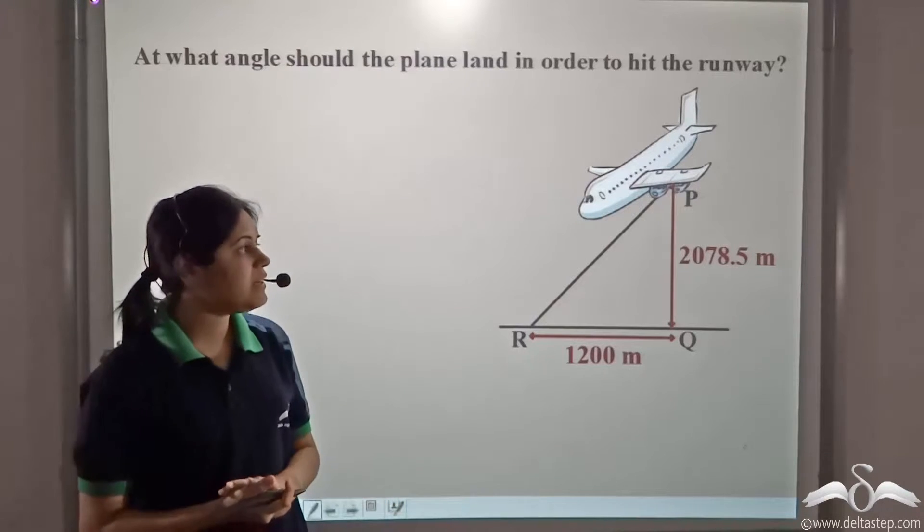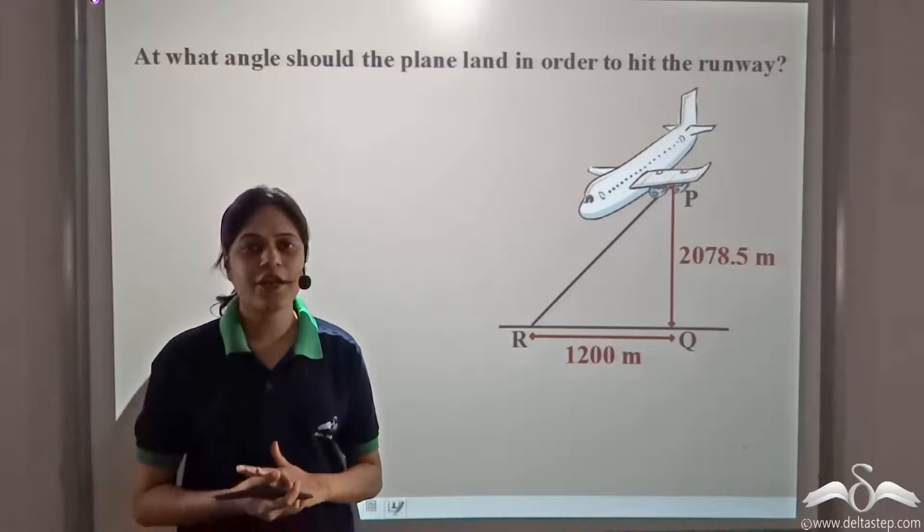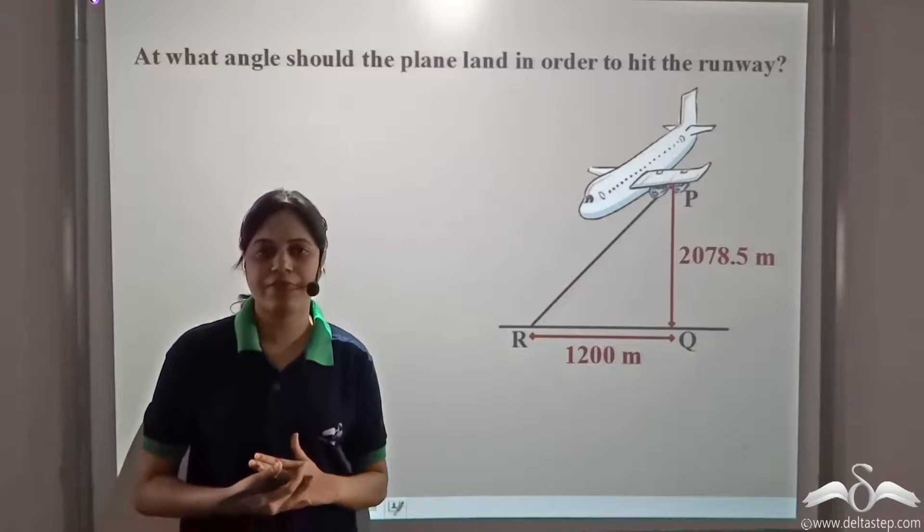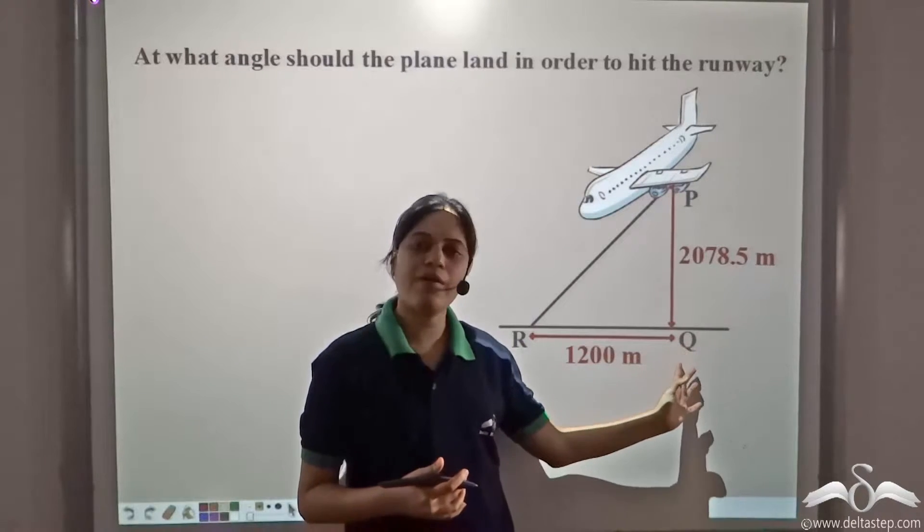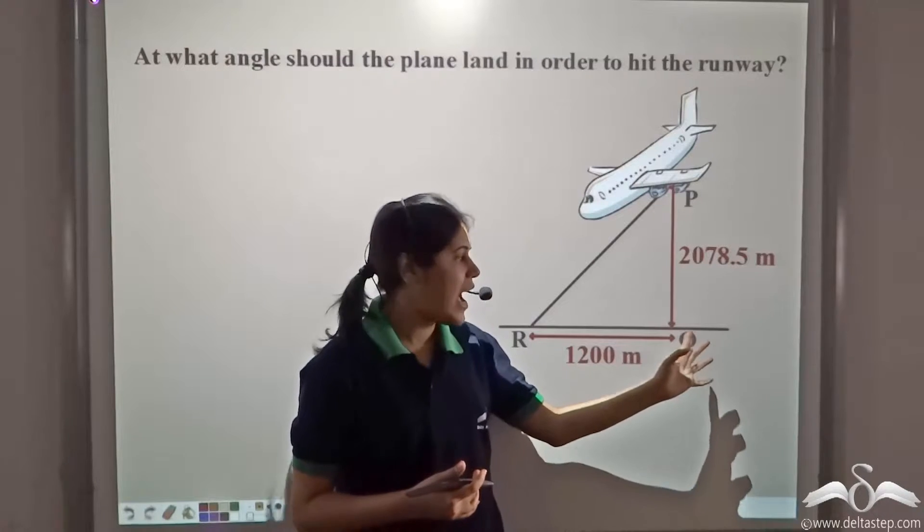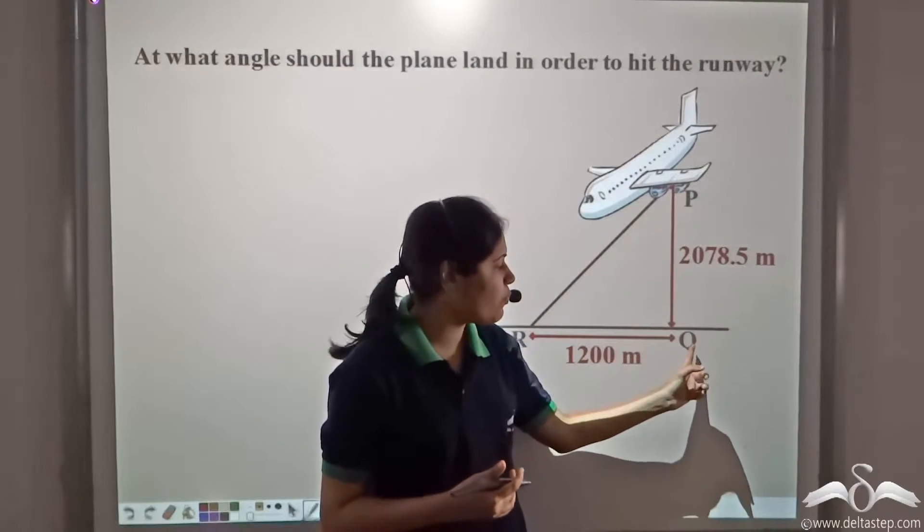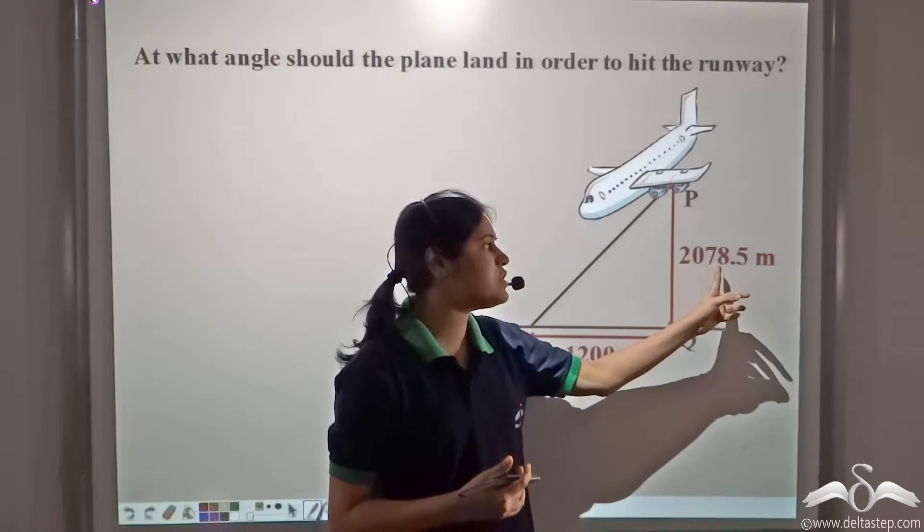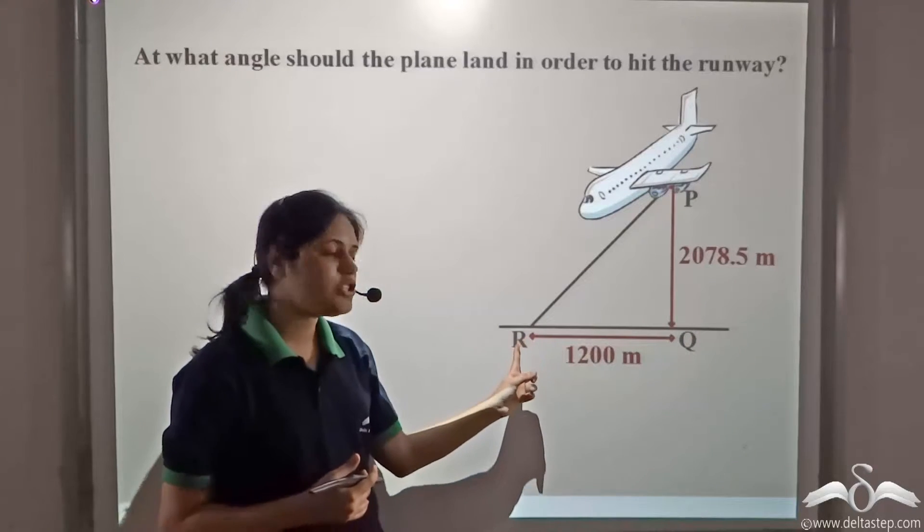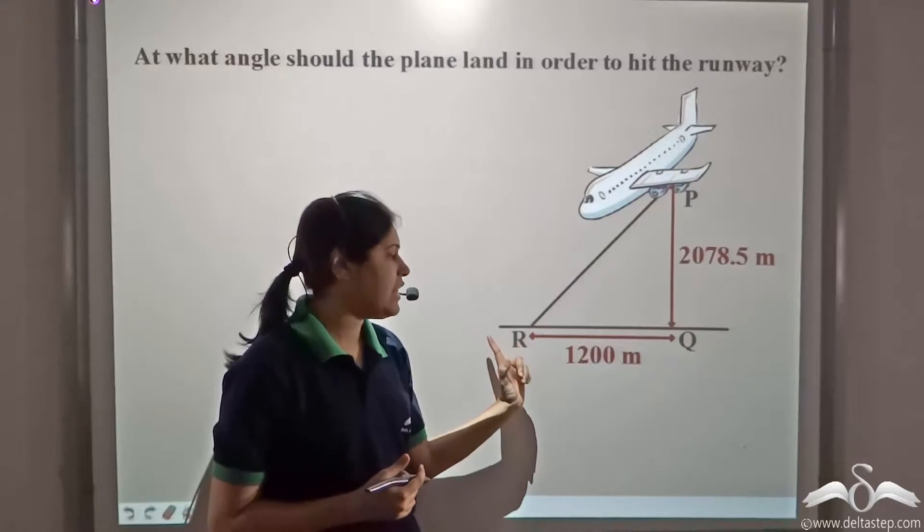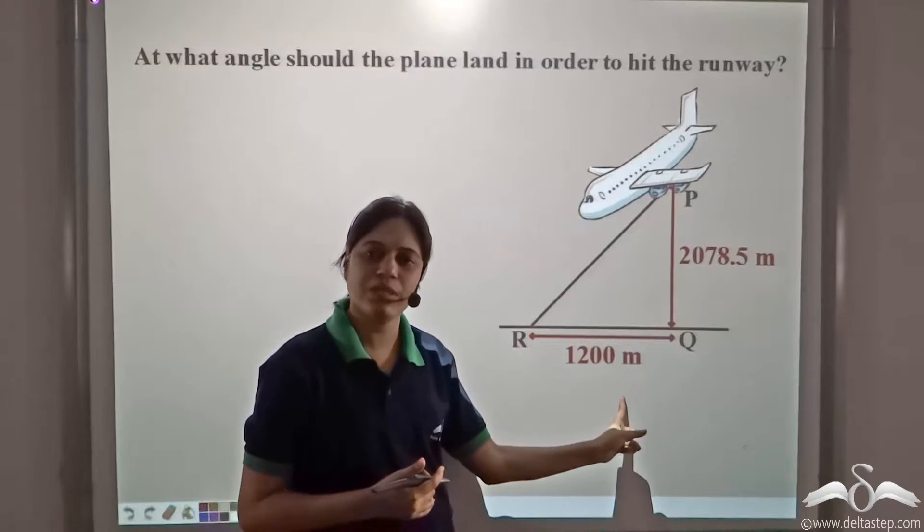Suppose a pilot needs to know at what angle he should make the plane land in order to hit the runway safely. He knows that the plane is above a point Q on ground and the vertical distance of the plane from point Q is two thousand seventy eight point five meters. He also knows that he needs to land at point R and the horizontal distance between point Q and point R is twelve hundred meters.